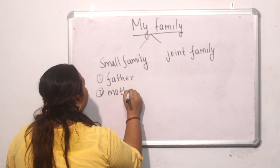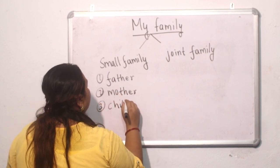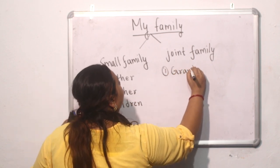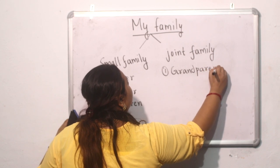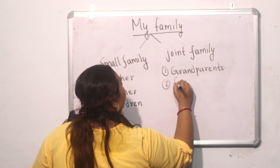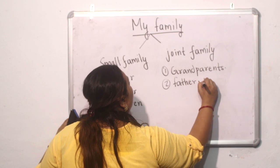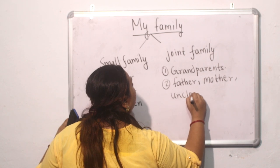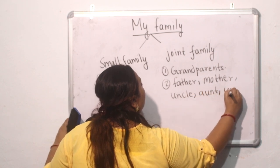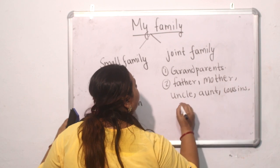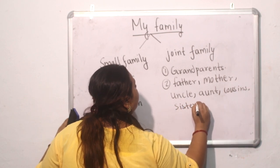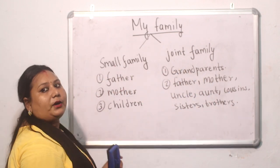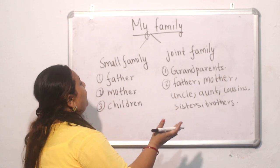In small family there are father, mother and children. And in joint family there are grandparents, father, mother, uncle, aunt, cousins, sisters, brothers. The number of members are more in joint family.